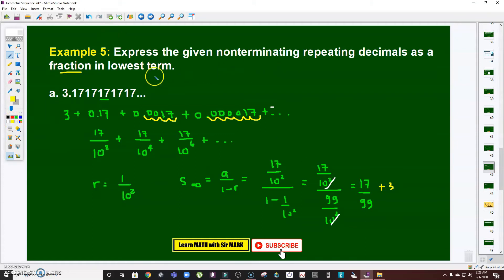We don't have the 3 yet. So therefore I have to add it by 3. Take note, the instruction is express it as a fraction in lowest term. So 17 over 99 plus 3—multiply by 99 times 3, it's just like 100 times 3, that's 300, but minus 3, so that's 297 plus 17.